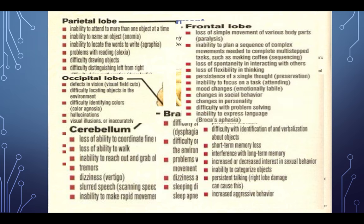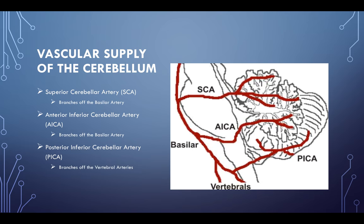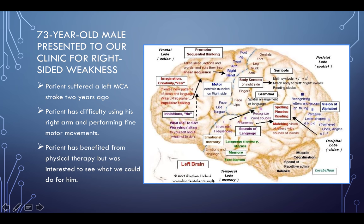Vascular supply to the cerebellum comes from three arteries: the superior cerebellar artery (SCA), the posterior inferior cerebellar artery (PICA), and the anterior inferior cerebellar artery (AICA). The SCA branches off the basilar artery to the anterior lobe of the cerebellum — responsible for legs. The AICA also branches off the basilar to the posterior lobe. The PICA branches off the vertebral arteries and supplies the inferior cerebellum.